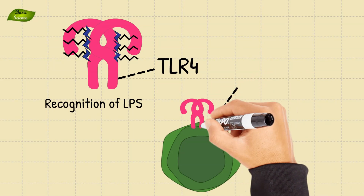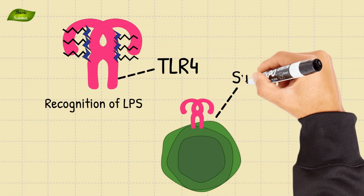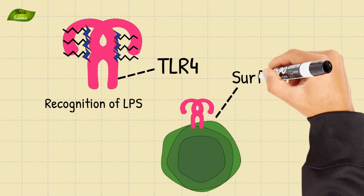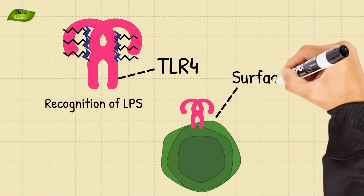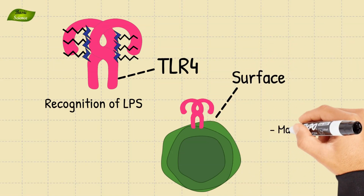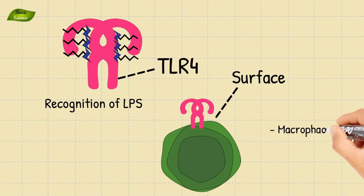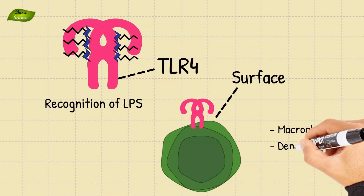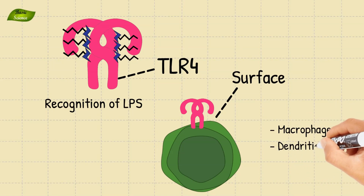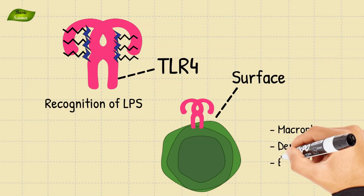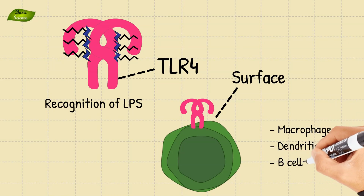The TLR4 receptor is expressed on the surface of various immune cells, including macrophages, dendritic cells, and B cells.